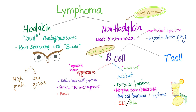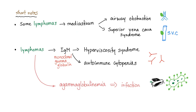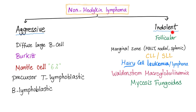B-cell aggressive includes mantle cell lymphoma, which is today's topic — an aggressive B-cell non-Hodgkin's lymphoma. Lymphomas that grow in the mediastinum can lead to airway obstruction and superior vena cava syndrome by compression. Some lymphomas produce IgM; some produce fewer immunoglobulins. The most common aggressive non-Hodgkin's is diffuse large B-cell lymphoma; the most common indolent is follicular lymphoma. Diffuse large B-cell is the most common overall.